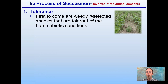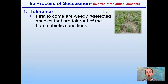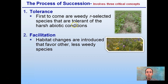The process involves three critical concepts. The first is tolerance. First come our weedy R-selected species that are tolerant of harsh abiotic conditions. Weeds always grow in areas regardless of whether it's good years or bad years. These R-selected species produce lots of offspring, so they're very tolerant of a variety of conditions because there are so many of them and they have a high degree of genetic variability. Continuing on with facilitation, this is where habitat changes are introduced that favor other, less weedy species.